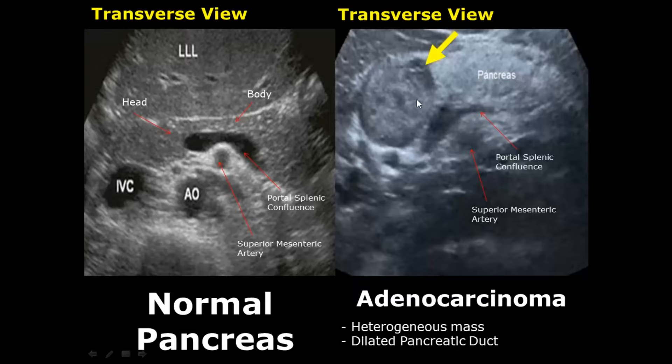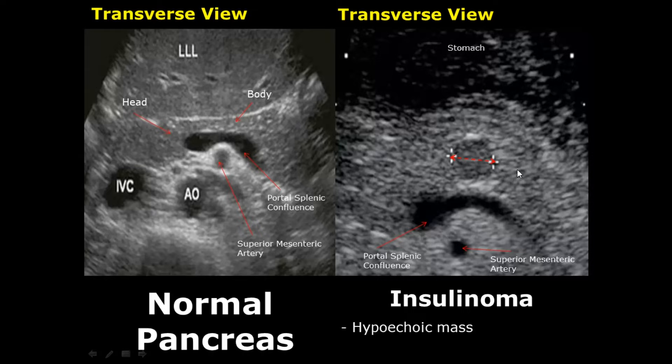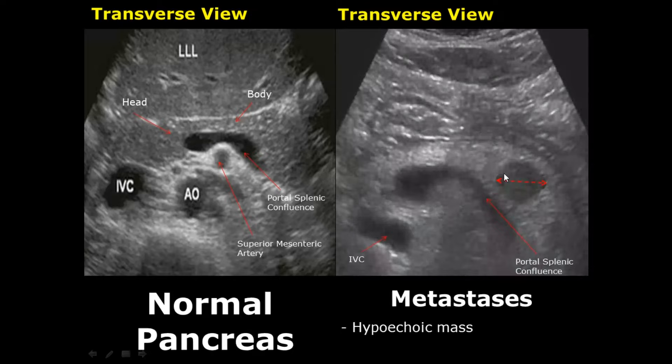Another form of neoplastic lesions of the pancreas are insulinomas; they appear as hypoechoic masses, and this mass resides in the body of the pancreas. Metastatic lesions in the pancreas will also give a hypoechoic appearance — here is a metastatic lesion in the pancreas due to lung cancer.